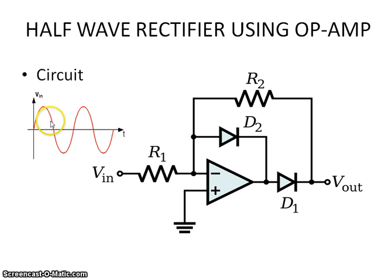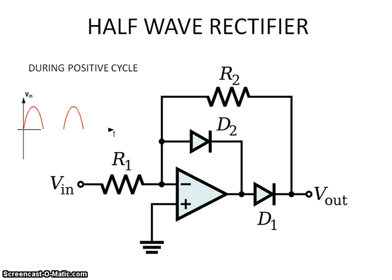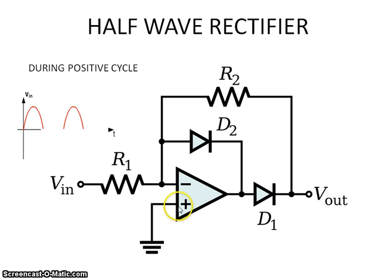What will happen when we apply the positive cycle? We are going to see this in two cases. In the first case, during the positive cycle, the op-amp initially acts as a comparator. A comparator always compares the voltages at the positive and negative terminals: if the positive terminal is greater, the output is plus V-sat; if the negative terminal is greater, the output is minus V-sat. Here, positive voltage is applied to the negative terminal and zero potential is at the positive terminal, so the output is minus V-sat.